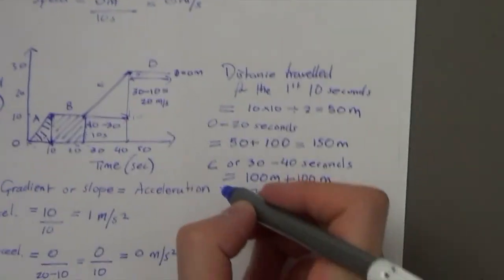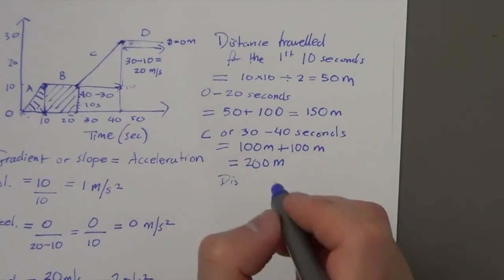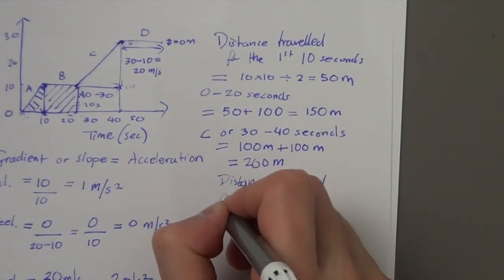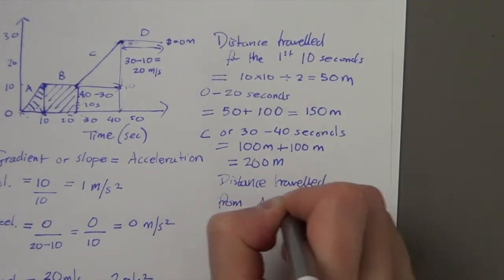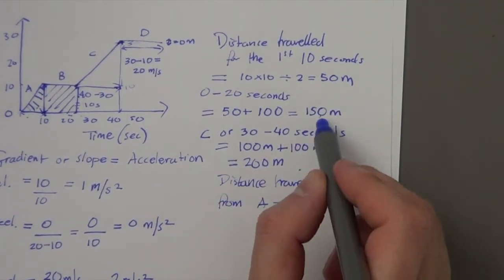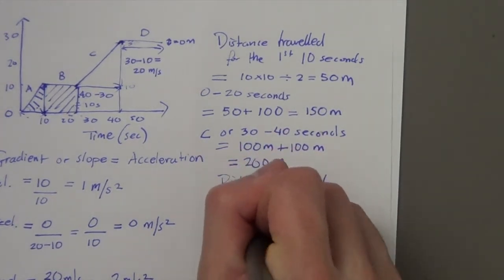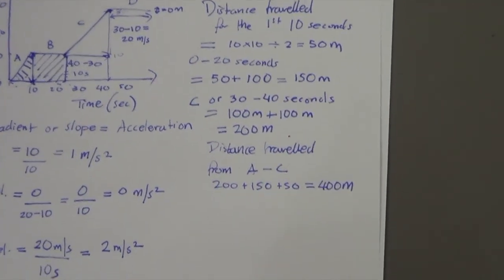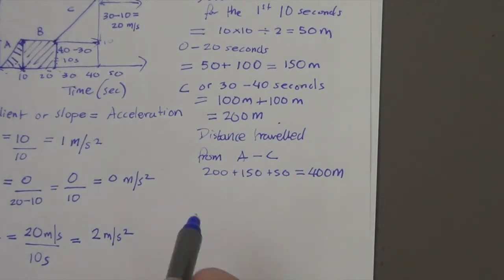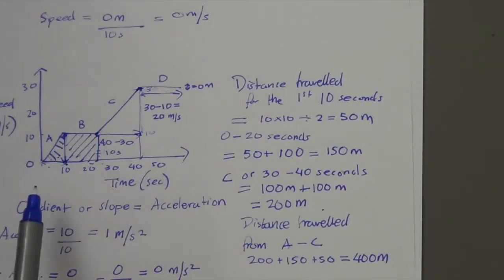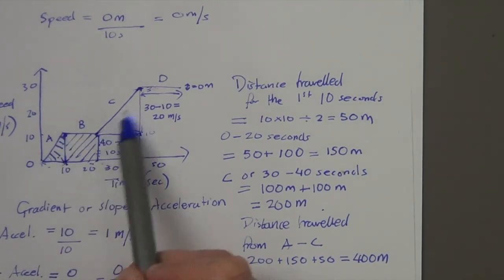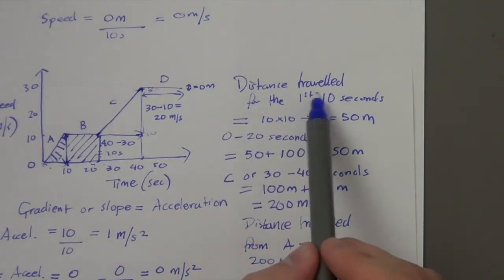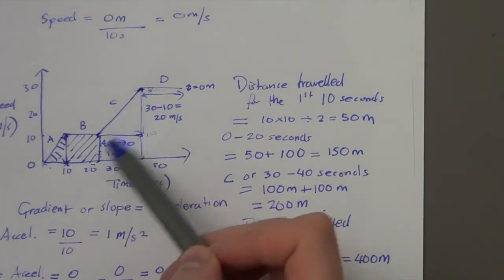If you were asked for the distance travelled from A to C, you'd add them all up: 50 plus 100 plus 200, which is 400 metres. Just remember, there are two things you can work out on a speed-time graph: the slope or gradient of the lines, which gives the acceleration, and the area underneath the line, which gives the distance travelled.